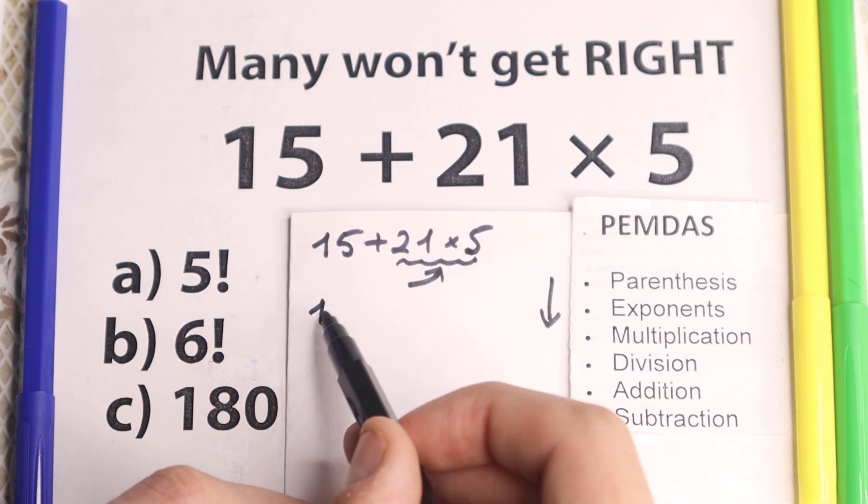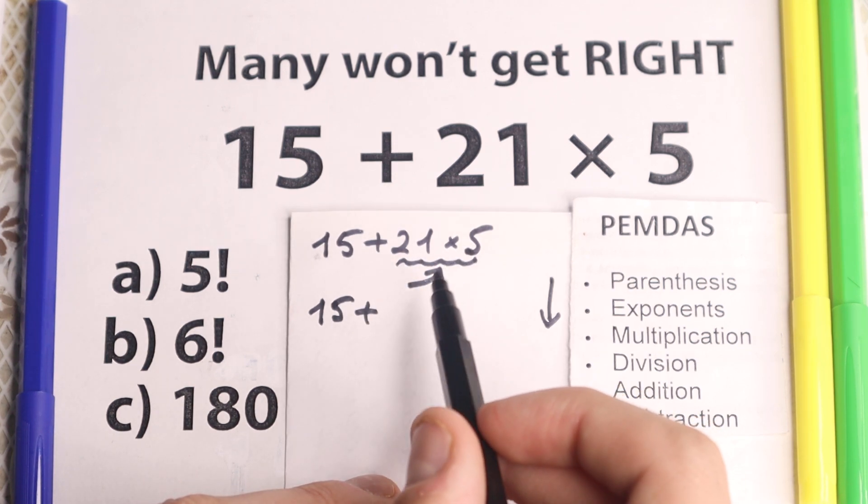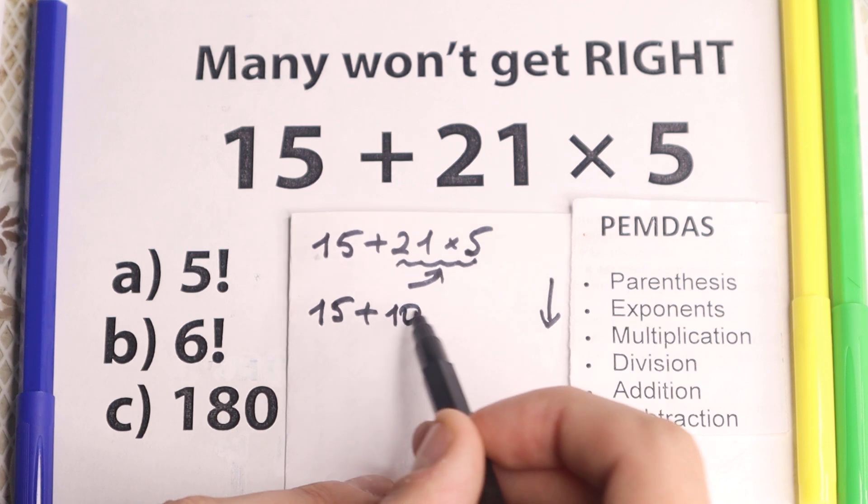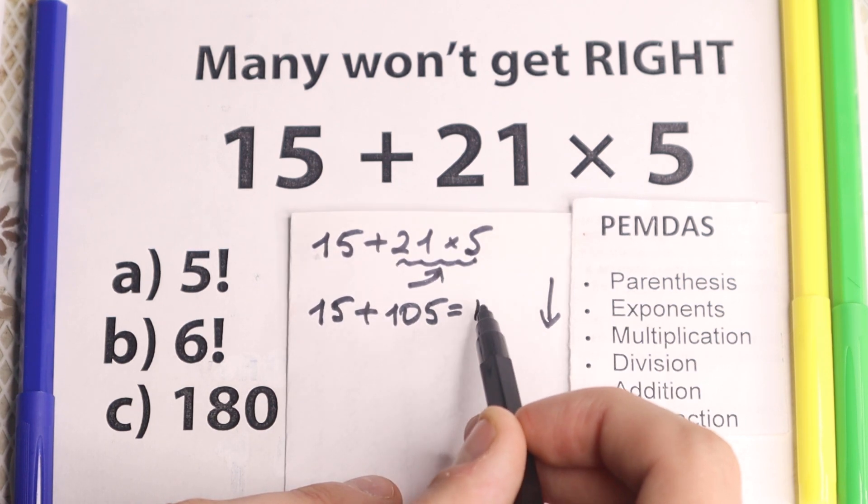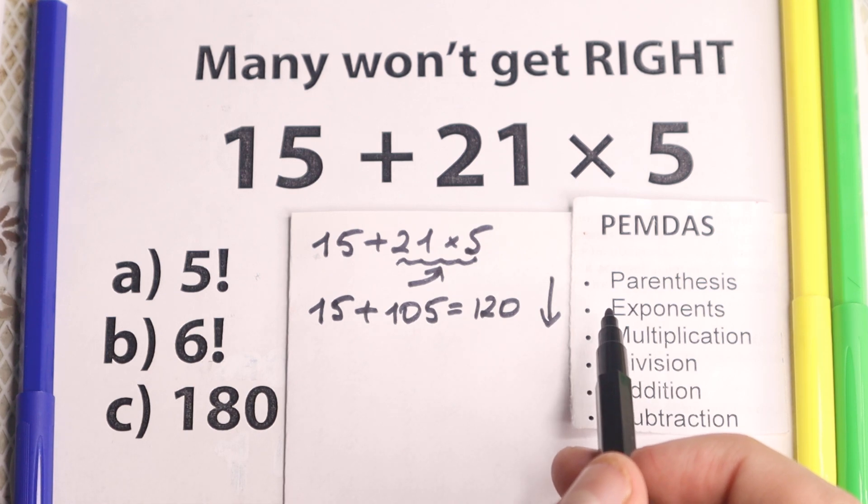So we have 15 plus 21 times 5 equal to, 15 plus 105, and as a result we'll have 120. So according to PEMDAS, a correct answer is 120.